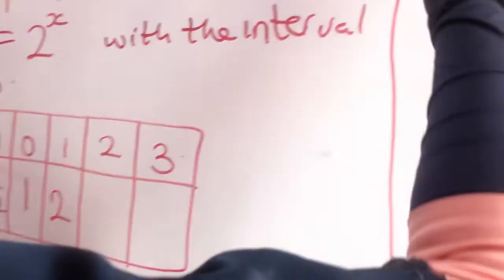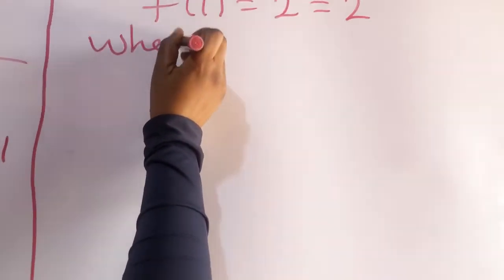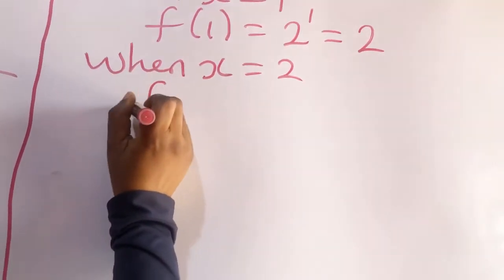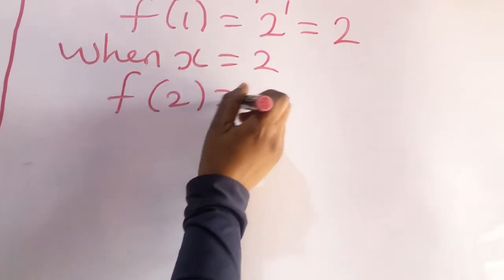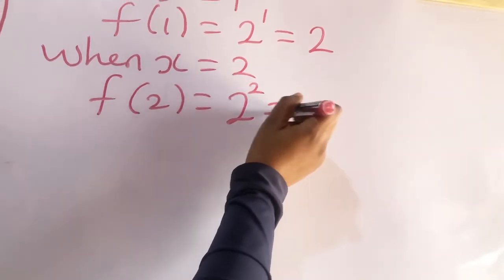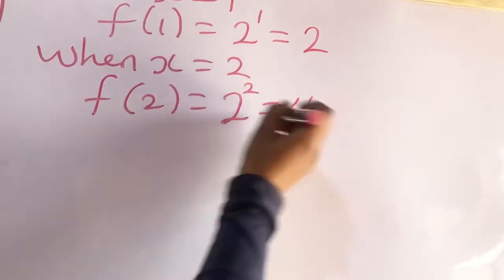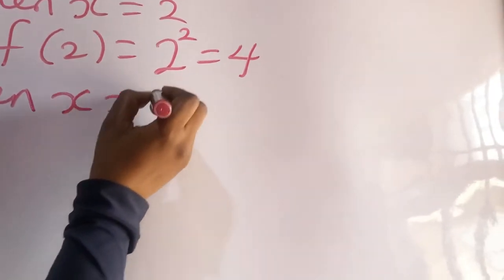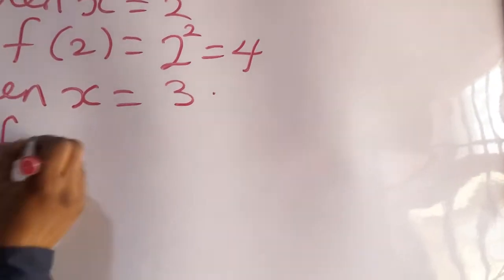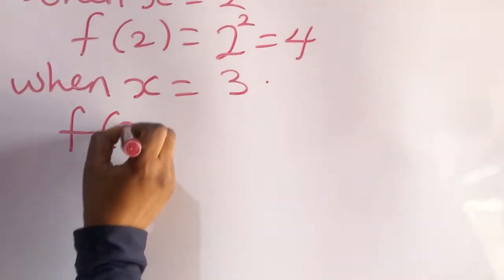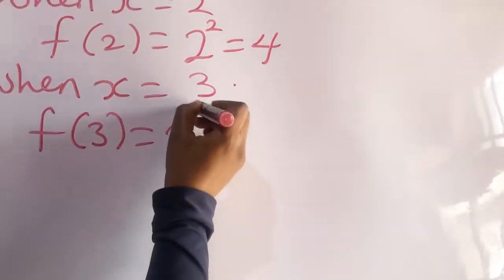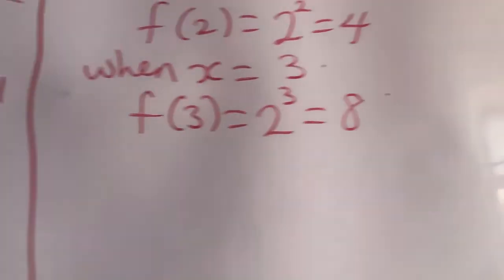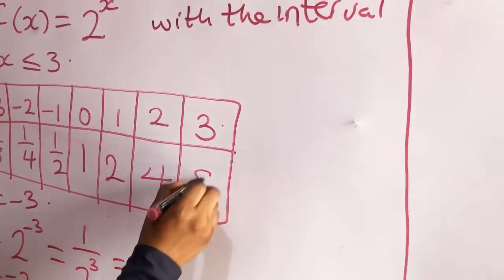When x is equal to 2, f(2) will be equal to 2 raised to the power 2, which is equal to 4. When x is equal to 3, f(3) will be equal to 2 raised to the power 3, which is equal to 8. So this one is 4 and this one is 8.